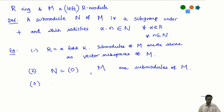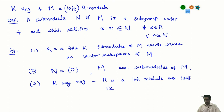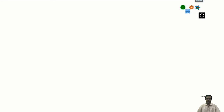Recall from last time that if R is any ring, then R is a left module over itself by the left multiplication operation: alpha acting on x is just alpha·x for all alpha in R. So I think of alpha as scalars and x from the ring R as the module elements. This left multiplication action makes R into a module over itself. Now, what are the sub-modules of this module?